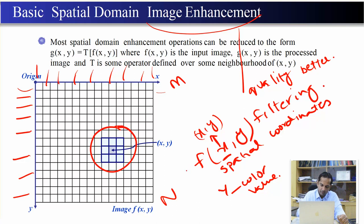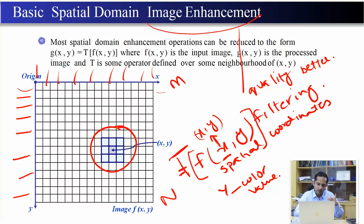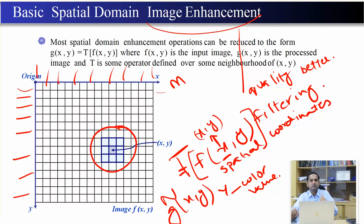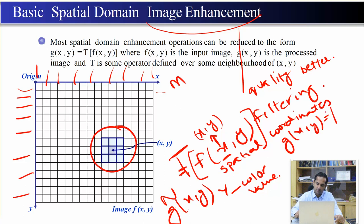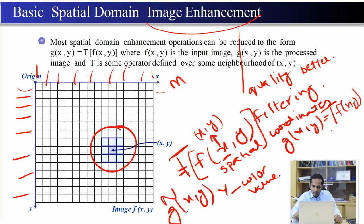हमारे पास एक given image f(x, y) है और हम उस पर एक transformation T लगाना चाहते हैं। यह transformation एक function है जो given image पर apply होगा और उसे convert करेगा एक और image में — जिसे हम g(x, y) कहते हैं। यह g(x, y) है improved, enhanced, या transformed image। तो g(x, y) = T of f(x, y)। यही Image Enhancement है, और इस transformation को करने का तरीका कहलाता है Filtering — अलग-अलग filters लगाना।